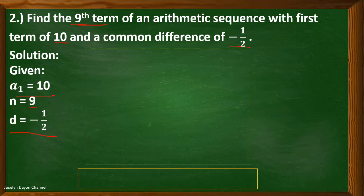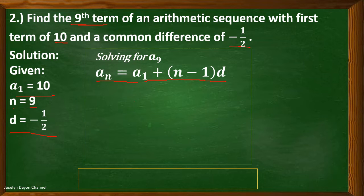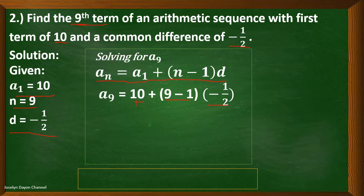We can now write the n-th term formula: a sub n equals a sub 1 plus the quantity of n minus 1 times d. Substituting: a sub 1 is 10 plus the quantity of 9 minus 1 times negative one half. Simplifying: copy 10, and 9 minus 1 equals 8, multiplied by negative one half.